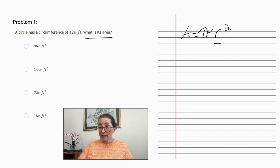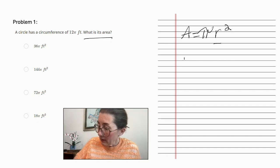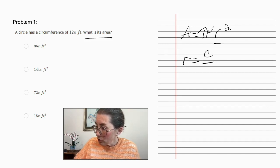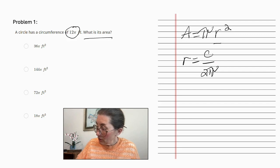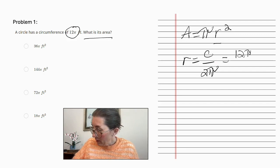But we don't know the radius, so we also need the formula for that. The radius is equal to the circumference over 2π. And we know the circumference is 12π.